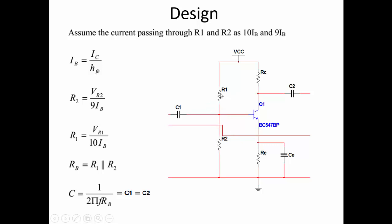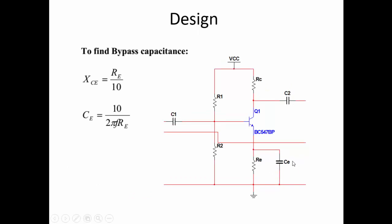The current through the voltage divider R1 and R2 is kept comparatively higher than the base current to avoid loading effects on the bias network. After calculating R1 and R2, the overall base resistance is R1 parallel R2. The input coupling capacitor C1 is calculated as 1/(2πF × RBase). C1 and C2 are taken as approximately equal. The bypass capacitor CE is found by setting its reactance to 1/10 of RE, giving CE = 10/(2πF × RE).